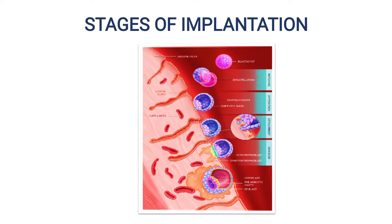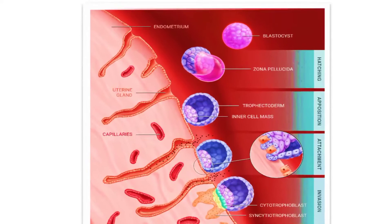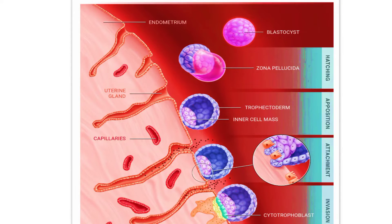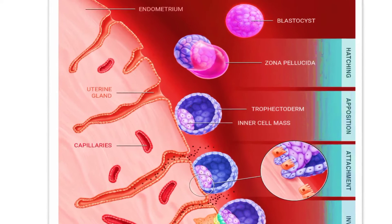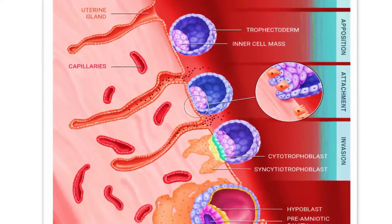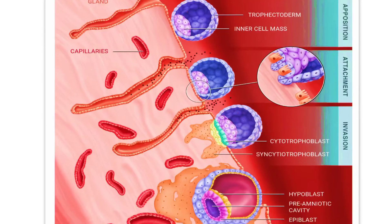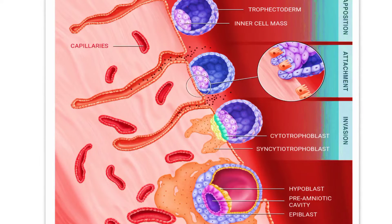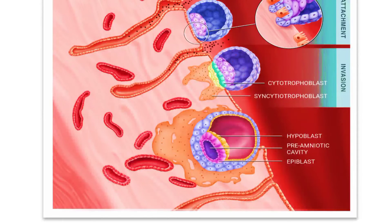The stages of implantation: firstly, the hatching occurs when the blastocyst forms. Then when it is transferred, the blastocyst and the zona pellucida hatches and then apposition occurs, then attachment occurs, then after that the invasion, in which the cytotrophoblast and syncytiotrophoblast occur, and then the hypoblast, pre-amniotic cavity, epiblast happen, and then the fetus.